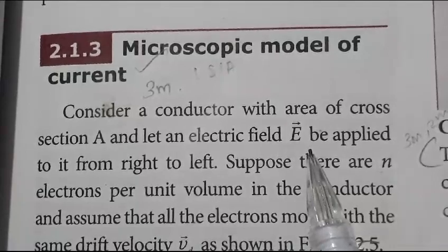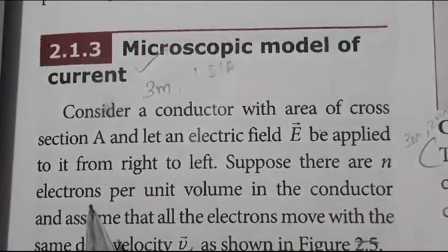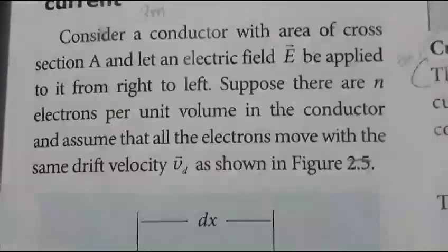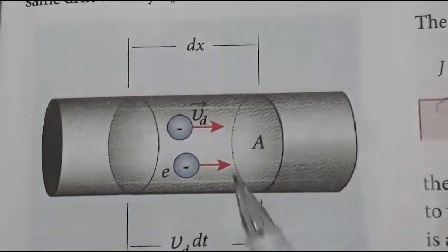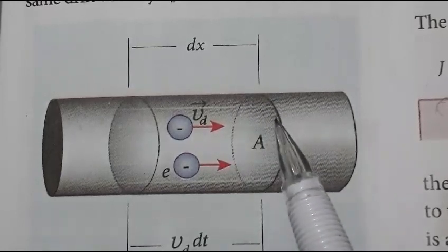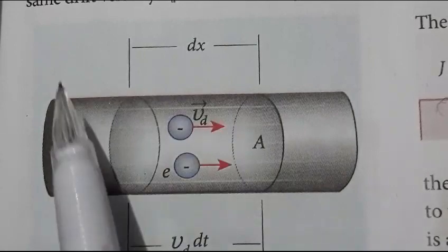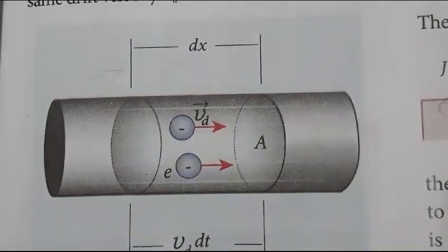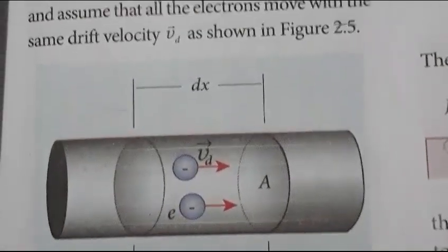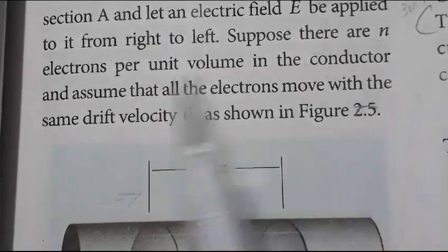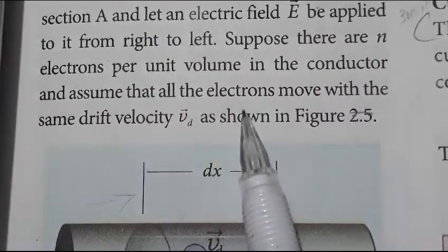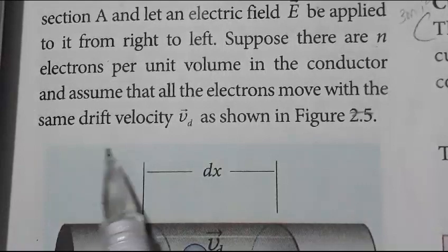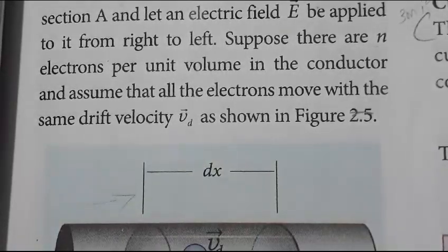Let an electric field E vector be applied to it from left to right. Suppose there are n electrons per unit volume in the conductor.